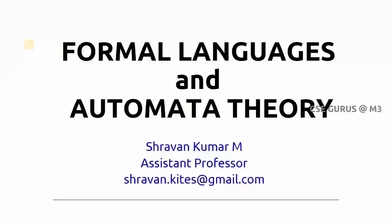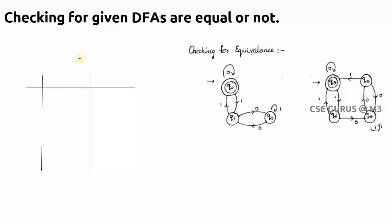Welcome to the class of Formal Language and Automata Theory. The next question is checking whether two given DFAs are equal or not. If we take two DFAs, we can say they are equal based on whether the strings accepted by one finite automaton are also accepted by the other.